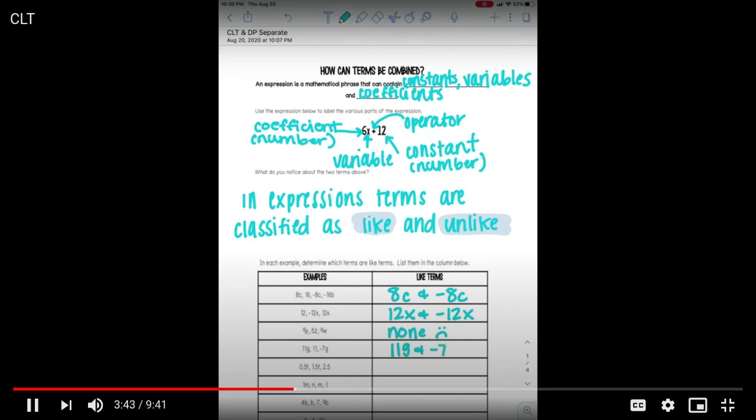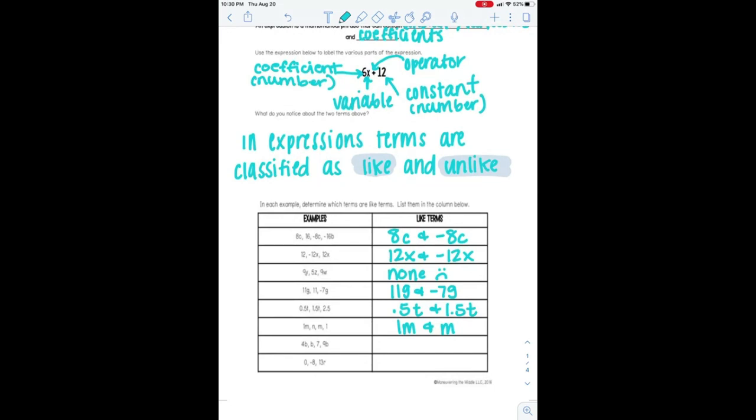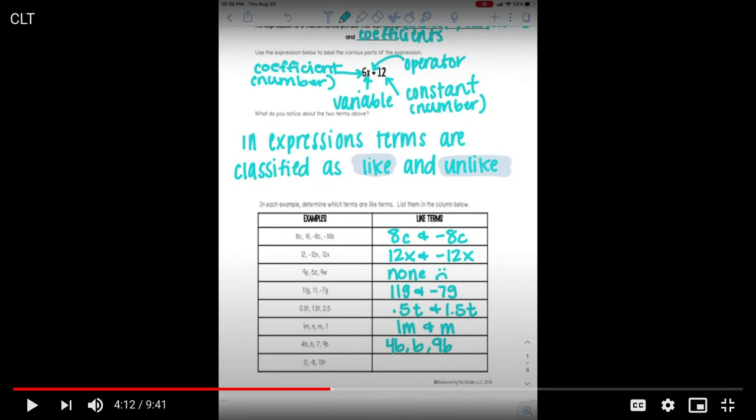So now that you have paused, I am just going to go through the rest of them. Check your answers against mine. So on this one I just did, I want to talk to you guys about it. So if you look, I put just b. So even though b has no coefficient, it is still a like term to 4b and 9b. So when thinking about like terms, you're not focused on the numbers or the coefficients. You are focused on the variables, okay?